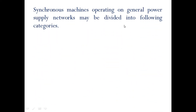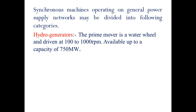Synchronous machines operating on a general power supply network are divided into the following categories. First, hydro generators: the prime mover is a water wheel, driven at 100 to 1000 RPM, available up to a capacity of 750 megawatt.